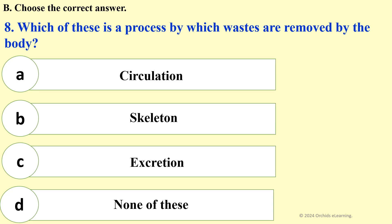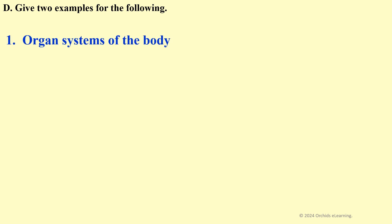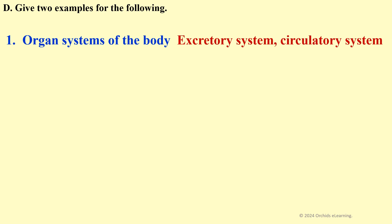Where does urine get formed? Excretion. Give two examples for the following: organ systems of the body — excretory system and circulatory system.